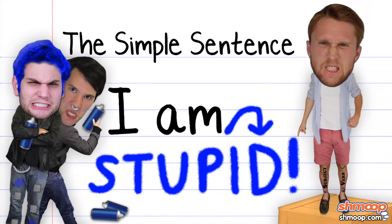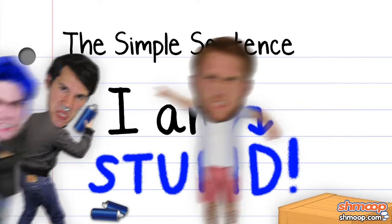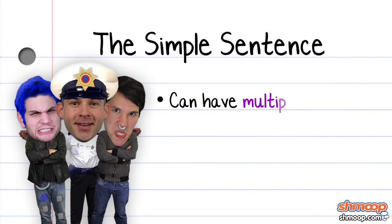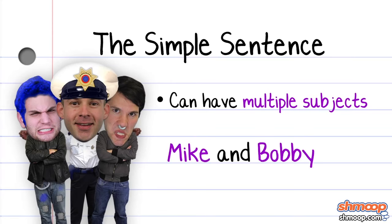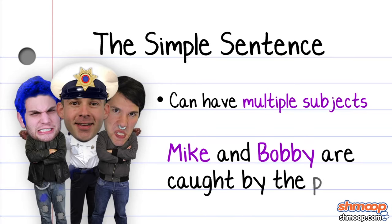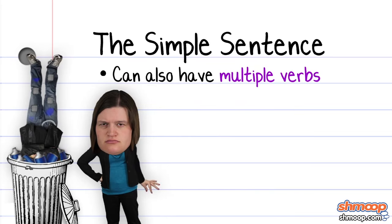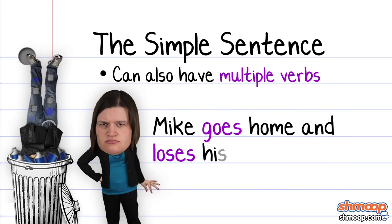But a simple sentence doesn't have to be quite so simple. It can have a compound subject — that is, multiple subjects — like, 'Mike and Bobby are caught by the police.' Or a compound verb: 'Mike goes home and loses his art supplies.'